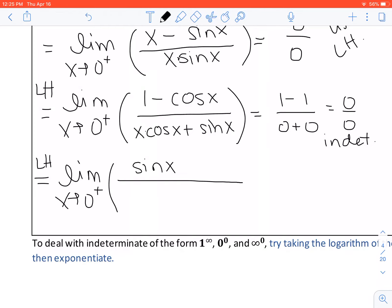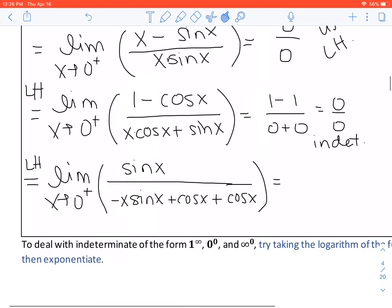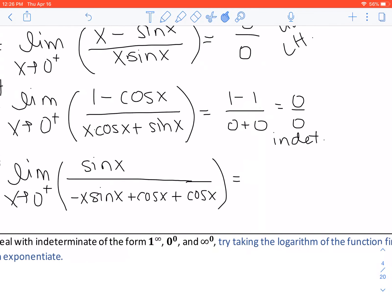And so we have the first times the derivative of the second, which is negative sine X. I'm going to move the negative out in front, plus the second times the derivative of the first, plus the derivative of our second term, which is the derivative of sine of X, which is cosine of X.